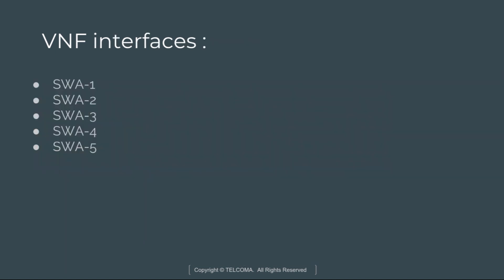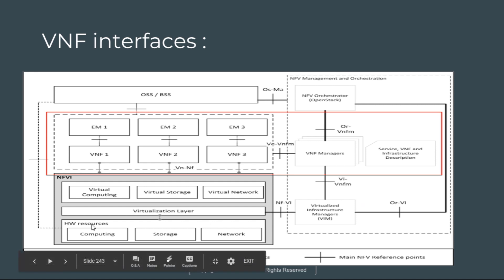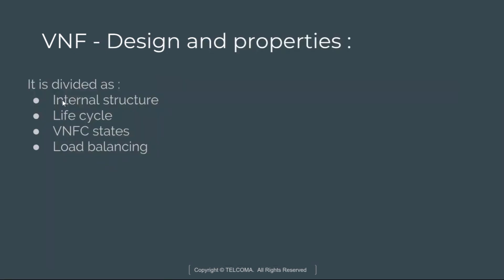We have five interfaces: SWA 1, 2, 3, 4, and 5. As we can see in the diagram, we have the virtualized network manager; this is the interface between storage, hardware resources, and all.